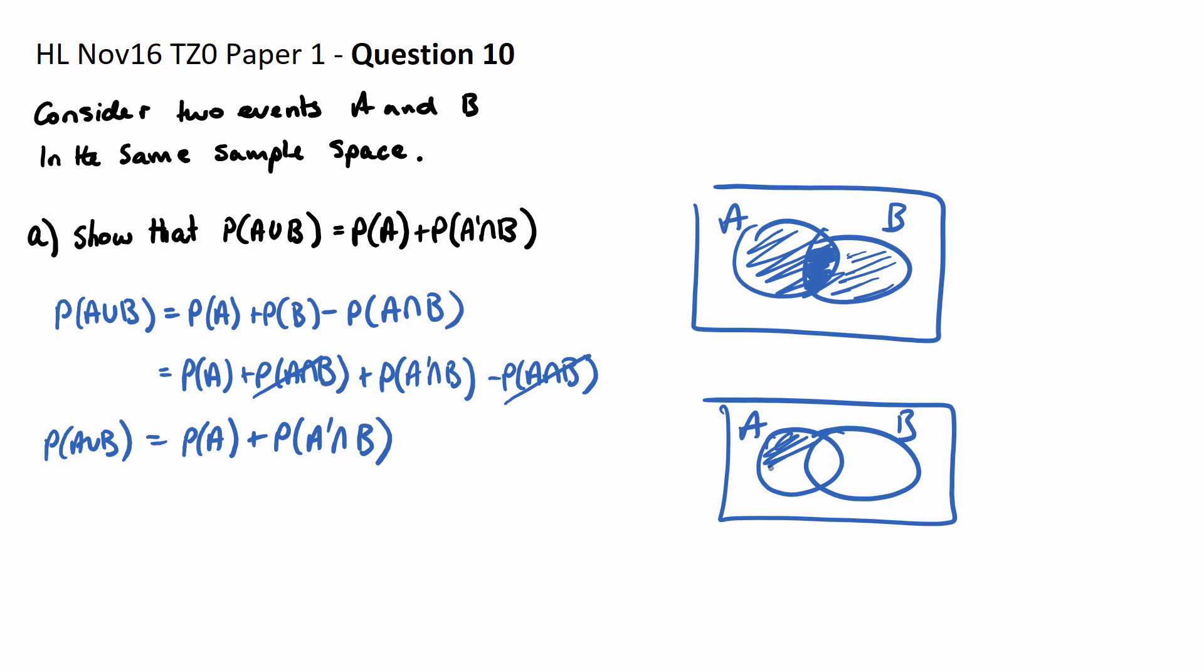the probability of A would have all of this, the probability of not A and B would just be the B bit. Okay, that's the answer to part A.